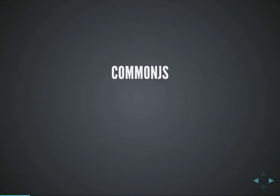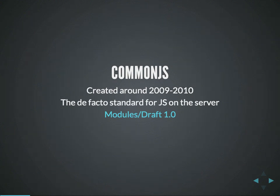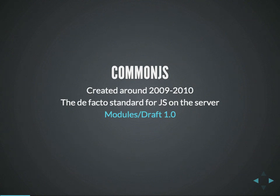Some very smart people came up with this thing called CommonJS, which has been around since around 2009-2010. It's basically the de facto standard for JS on the server. CommonJS is awesome — it's a very elegant solution to packaging your JavaScript into modules that have contained scope local to the module, so you're not creating a bunch of global stuff. It also defines a mechanism for modules to depend on and require other modules, and if you've ever worked with Node.js you'll know that it's awesome to work with.